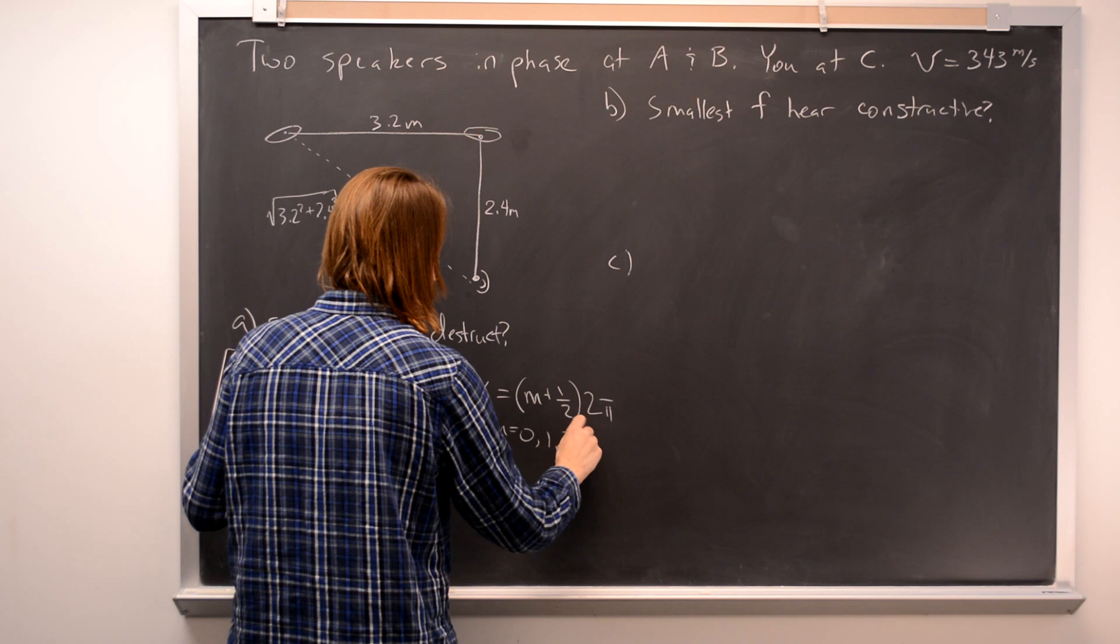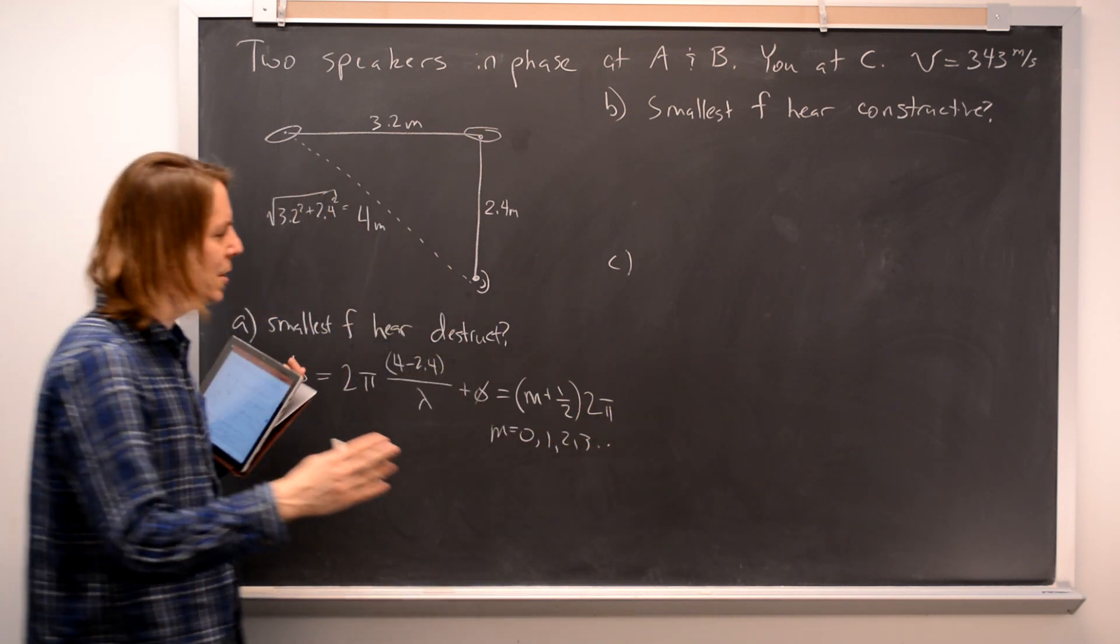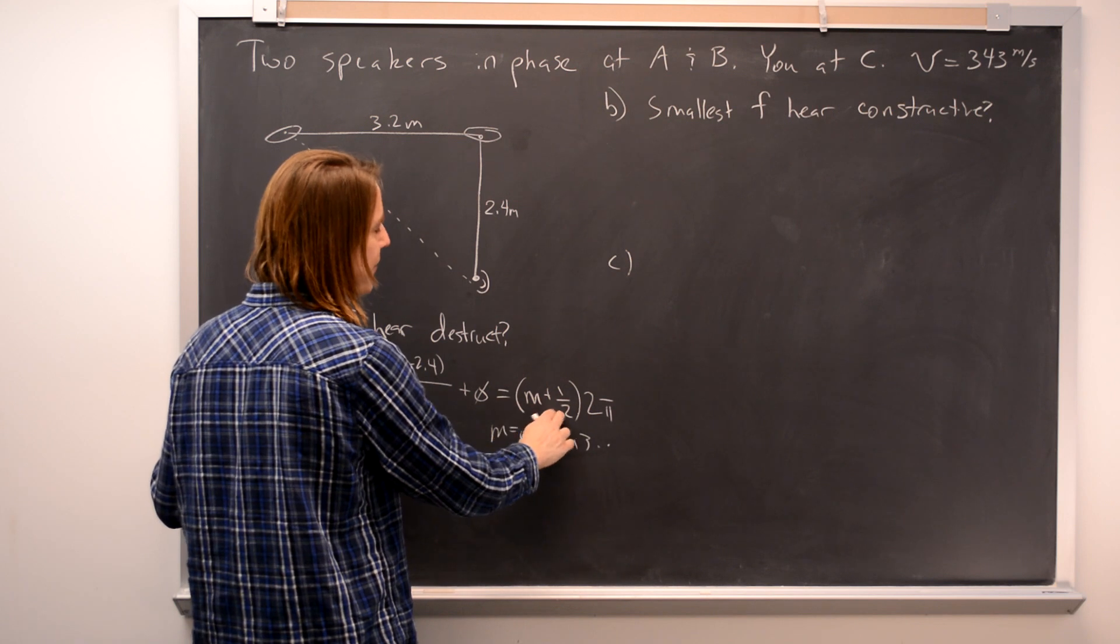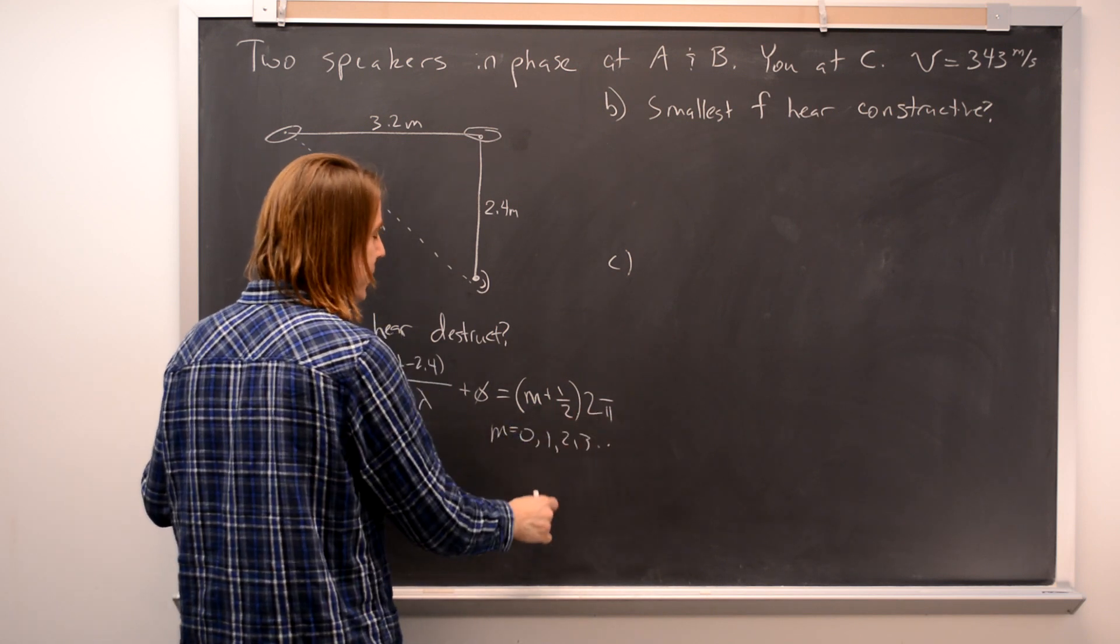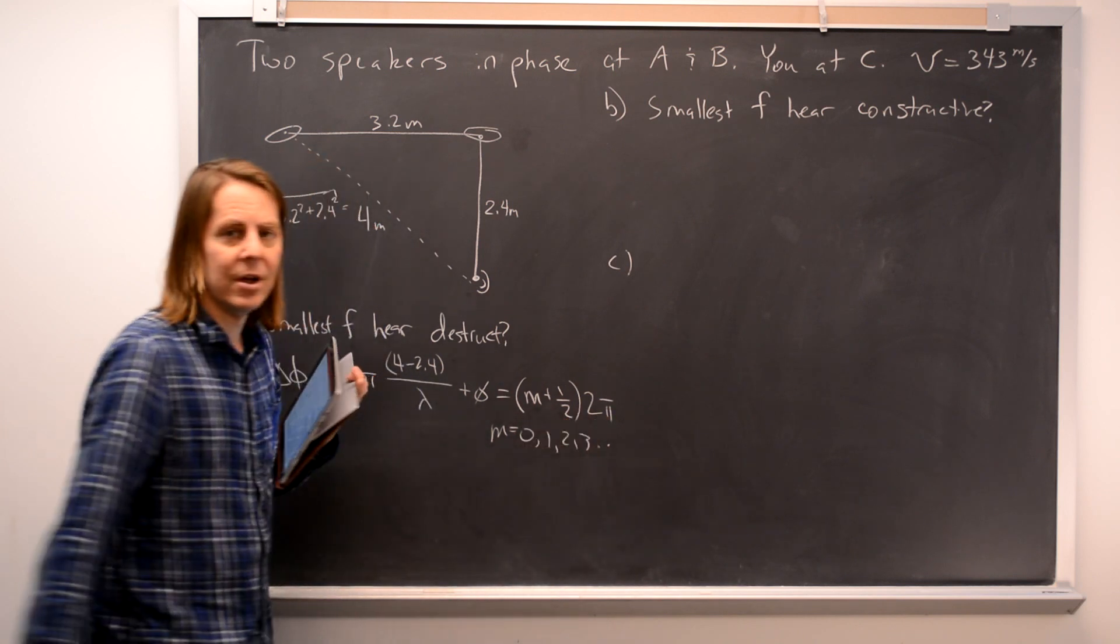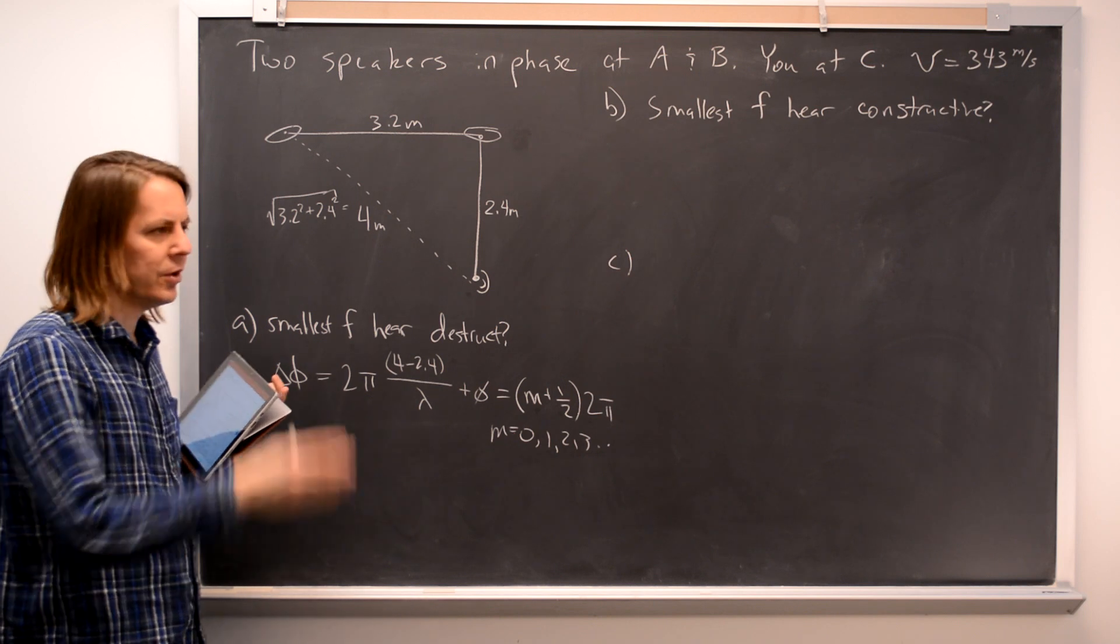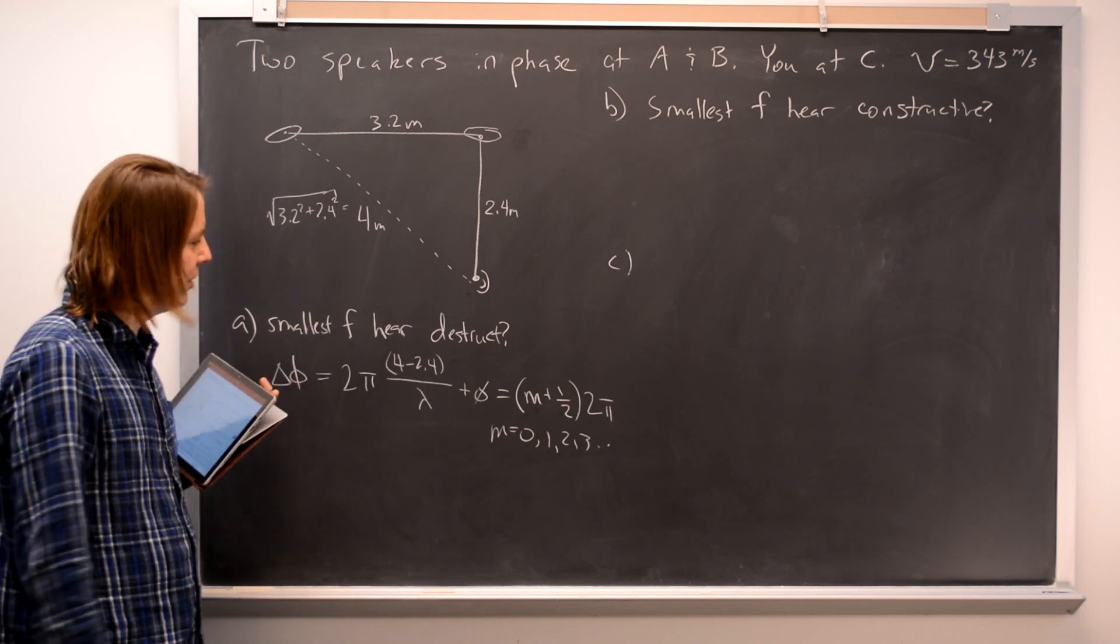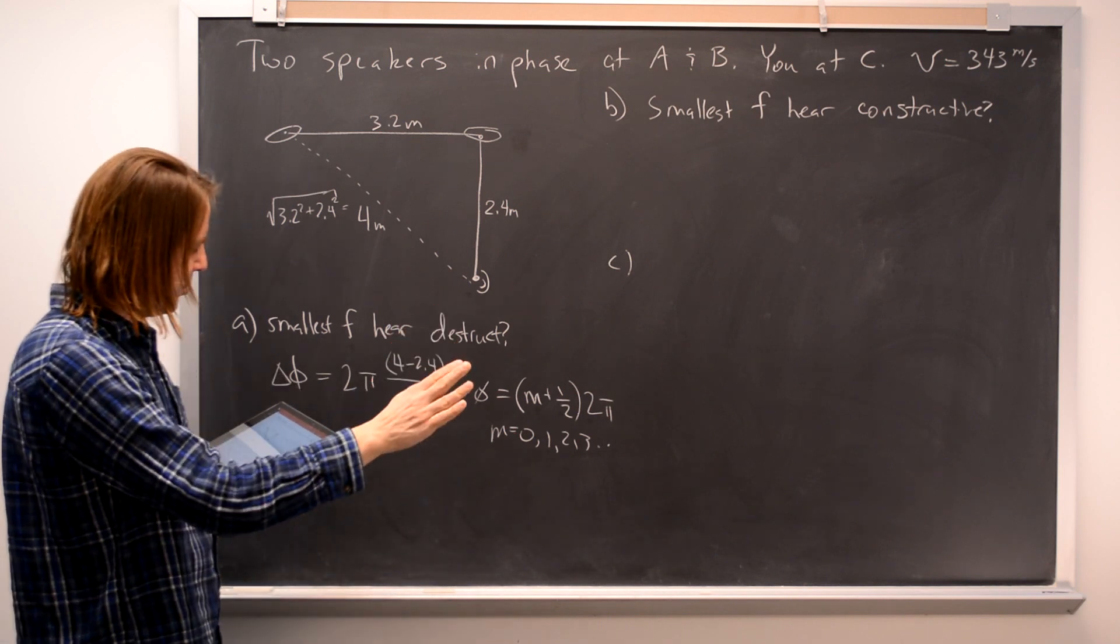This lets you keep the full set of M values. Keep the 0, keep all the numbers. Because you plug in 0, you get a half of a phase. You plug in 1, you get 3 halves of a full cycle of phase. 2, you get 5 halves. So this preserves the case. It only hits the destructive interference cases, whereas every halfway length would hit the constructive interference.